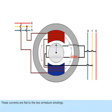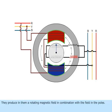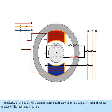These currents are fed to the two armature windings. They produce in them a rotating magnetic field in combination with the field in the poles. The polarity of the poles will alternate north-south according to changes in red and yellow phases of the incoming machine.